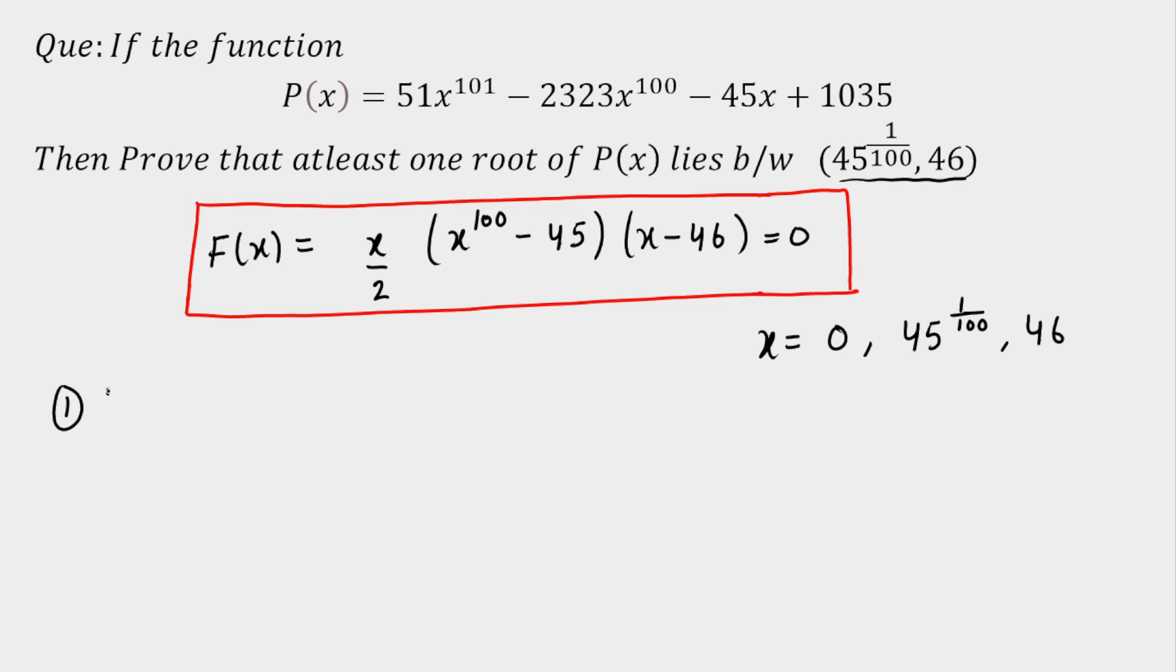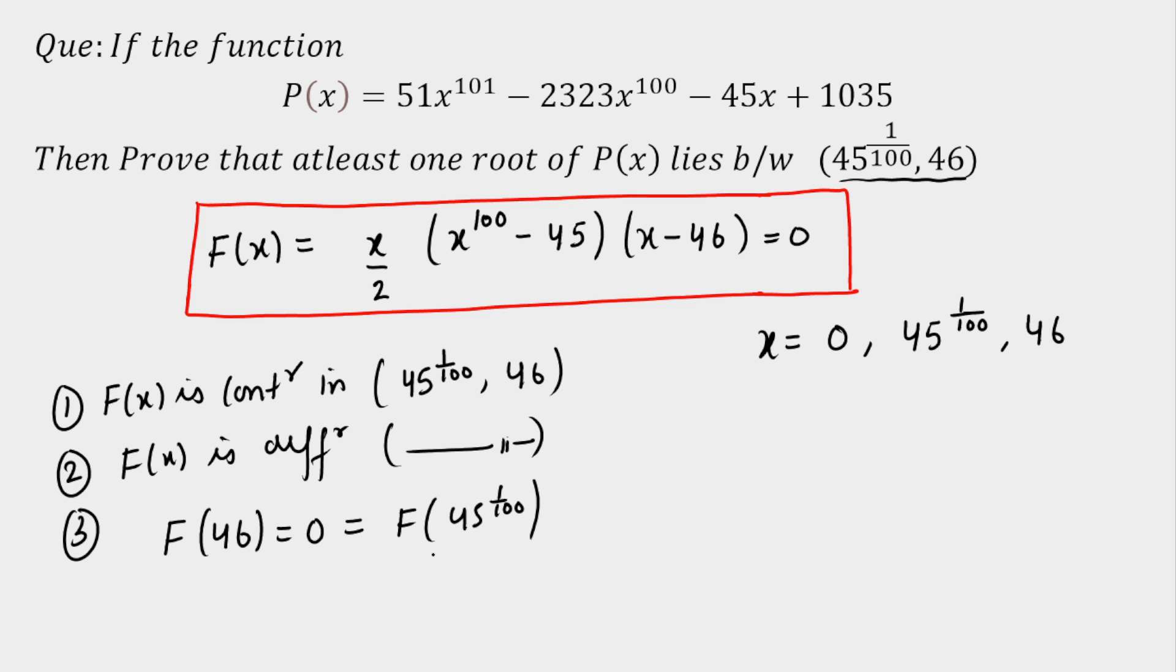Let us say, first notice: F(x) here is a continuous function in the range you can say 100th root of 45 and then till 46 here. Second note is F(x) is differentiable as you can see in the same range. Now third is F(46) is equal to 0, similarly it will be equal to F of 100th root of 45. So on these two values, F(x) will be equal to 0.